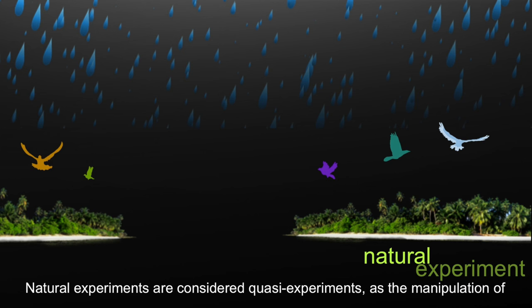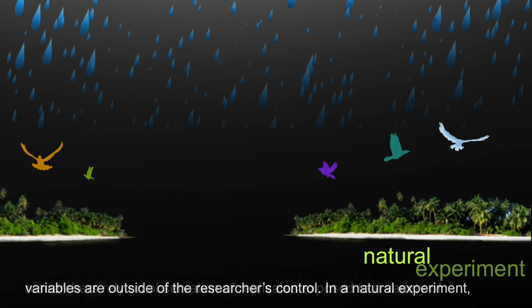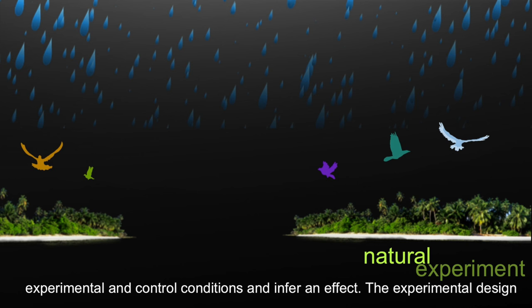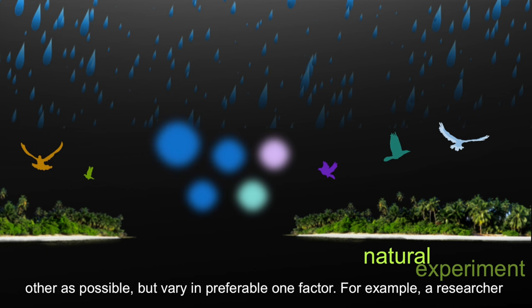Natural experiments are considered quasi-experiments, as the manipulation of variables is outside of the researcher's control. In a natural experiment, researchers rely on observations of replicates exposed to a variety of experimental and controlled conditions and infer an effect. The experimental design seeks to select replicates that closely resemble each other as possible but vary in preferably one factor.